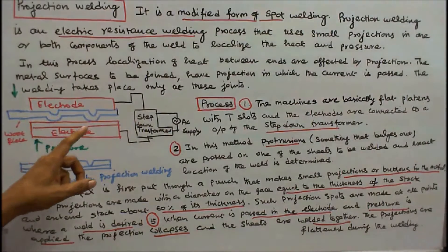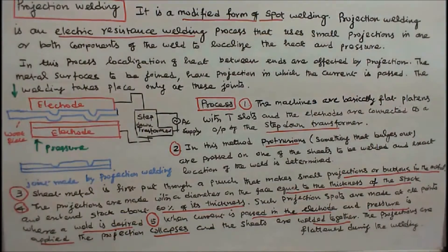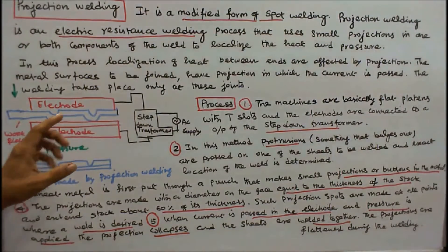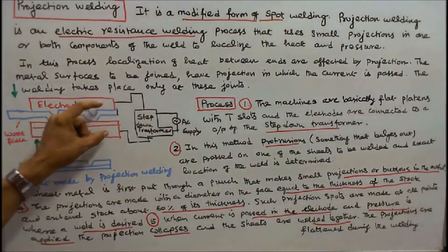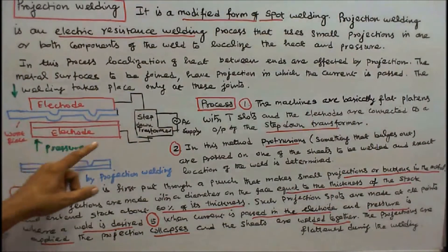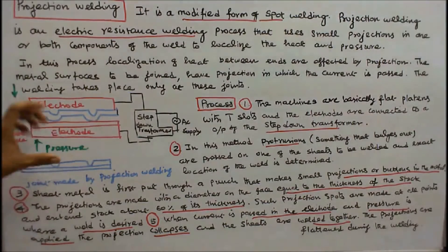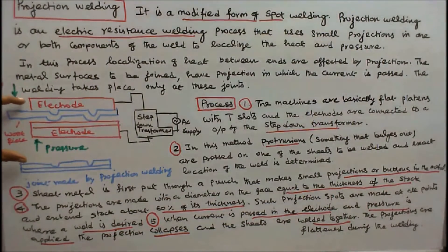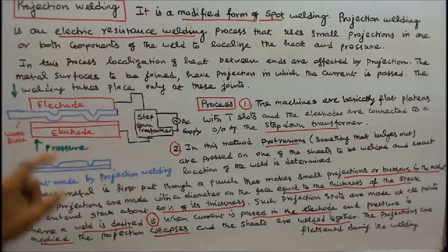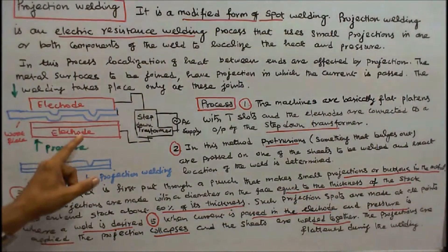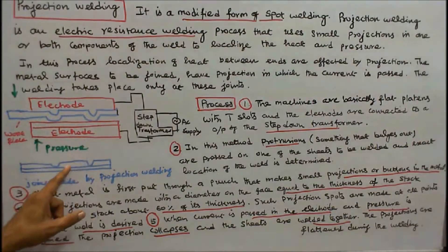Such projection spots are made at all points where a weld is desired. Number 5: When current is passed in the electrode and the pressure is applied, the projection collapses and the sheets are welded together. The projections are flattened during the welding.